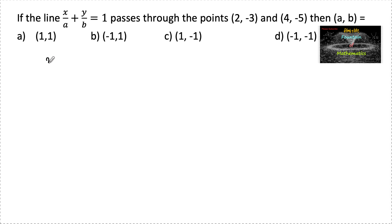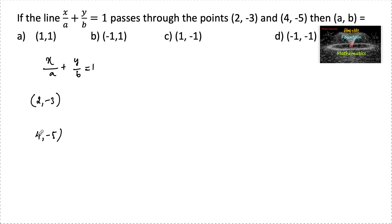If the line x upon a plus y upon b is equal to 1 passes through the points (2, -3) and (4, -5), then find the value of a and b. When the line passes through the point (2, -3), substituting x = 2 gives: 2 upon a plus (-3) upon b is equal to 1.